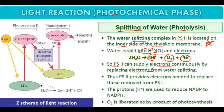The question is where the electrons came from and how the Z scheme goes ahead. The Z scheme proceeds with the splitting of water. The water present in leaves is split to form electrons. PS2 provides electrons needed to replace those removed from PS1. PS1 reduces NADP+, and then PS2 makes new electrons again by splitting water.